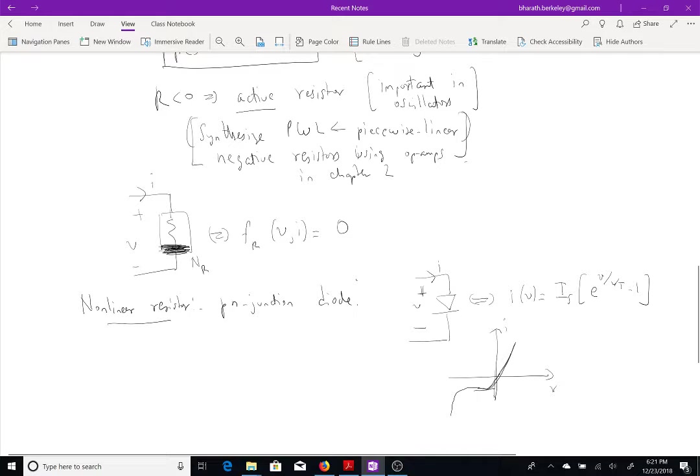The diode conducts when, or it acts like a short circuit when the voltage across the diode is positive, and it actually turns off, like this point here, negative IS, the saturation current, here is extremely small. But we'll talk more about diodes throughout the book.